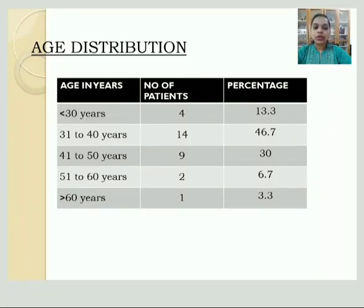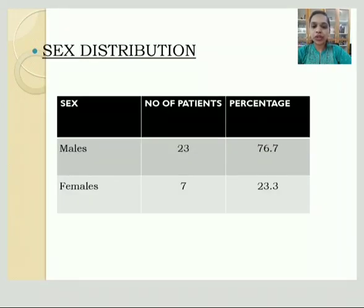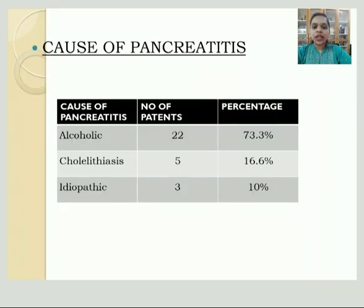Regarding age distribution: out of 30 patients, 4 were aged below 30 years, 14 were aged between 31–40 years, 9 between 41–50 years, 2 between 51–60 years, and 1 patient was more than 60 years. Majority, that is 46.7%, were aged between 31–40 years. Regarding sex distribution, 23 patients were males (76.7%) and 7 were females (23.3%). Regarding causes, majority were alcoholic (73.3%), cholelithiasis was the cause in 5 patients, and idiopathic in 3 patients (10%).